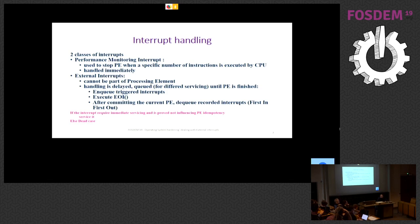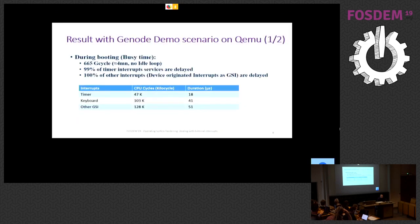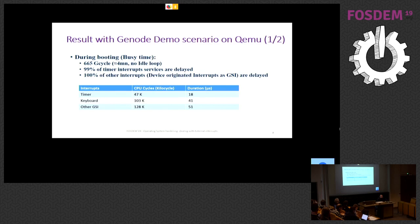We tested this approach on a Genode system with its microkernel Nova. During the booting phase, which lasts about 600 CPU giga-cycles — approximately four minutes with no idle loop — we noticed that 99 percent of all timer interrupts are delayed, and all other interrupts were also delayed during this busy phase. Timer interrupts were delayed on average 18 microseconds; all other interrupts like keyboard or global system interrupts were delayed about 40 to 50 microseconds.